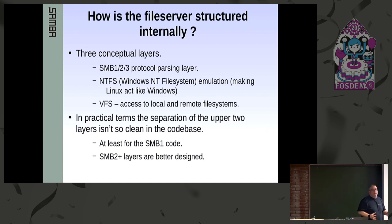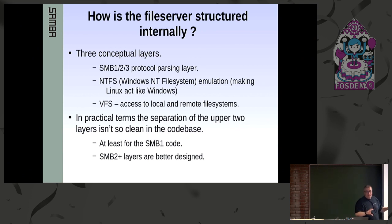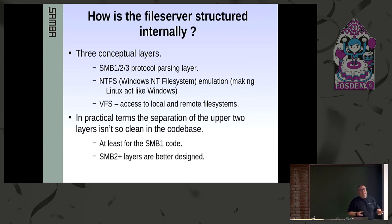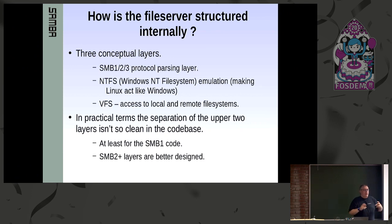The file server has basically three conceptual layers. There's the protocol parsing layer — packets come in off the network and we have to unpack them into a set of SMB1, 2, or 3 commands. Then we have the most complex layer, which is what we think of as the NTFS emulation layer. NTFS is the Windows file system and it has semantics very different to the standard POSIX file systems on Linux and other Unixes. One of the main jobs of Samba is to translate SMB requests, which are essentially NTFS semantics on the wire, into things that allow POSIX to emulate NTFS.